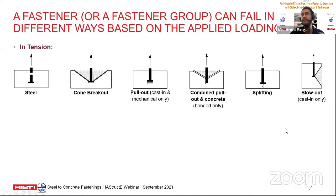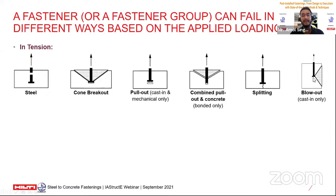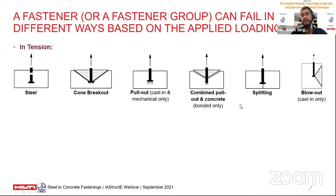Blowout failure is unique to cast-in anchors. The head generates high bearing pressure, which causes bursting forces perpendicular to the applied tension loading — the blowout appears on the side face. This normally occurs when you are close to an edge and have embedded the anchor too deep. You can calculate the residual resistance remaining in this scenario.